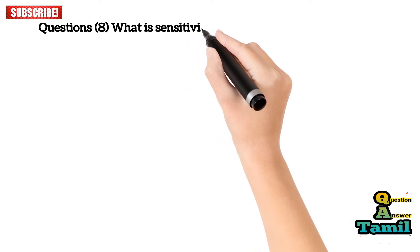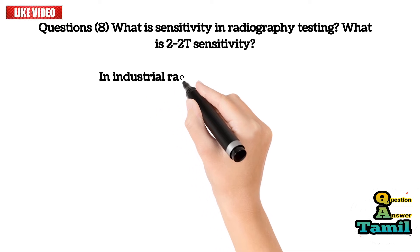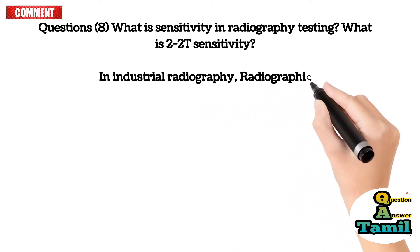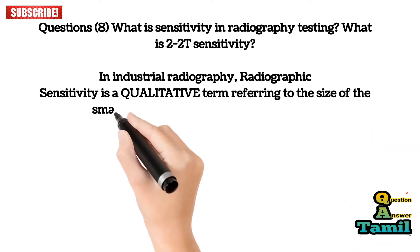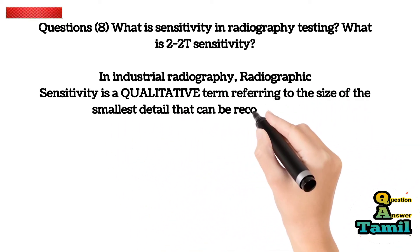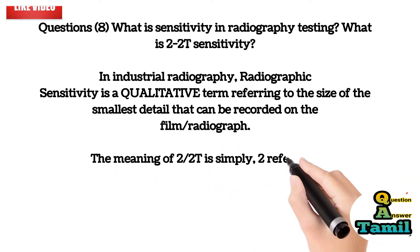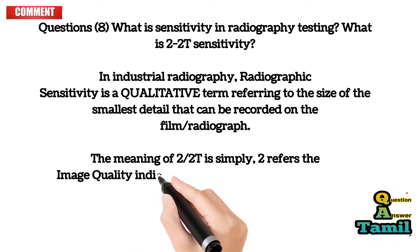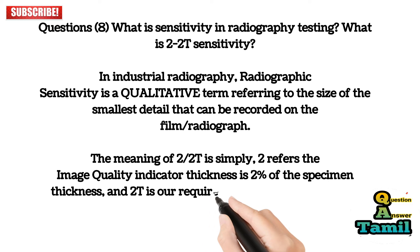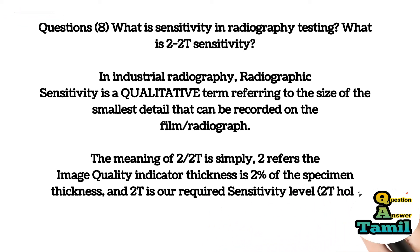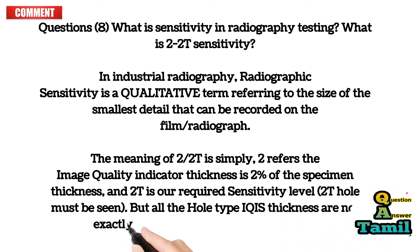Question 8: What is sensitivity in radiography testing? What is 2-2T sensitivity? In industrial radiography, radiographic sensitivity is a qualitative term referring to the size of the smallest detail that can be recorded on the film (radiograph). The meaning of 2-2T is: 2 refers to the image quality indicator thickness as 2% of the specimen thickness, and 2T is the required sensitivity level — the 2T hole must be visible. Note that not all hole-type IQI thicknesses are exactly 2% of the test specimen thickness.